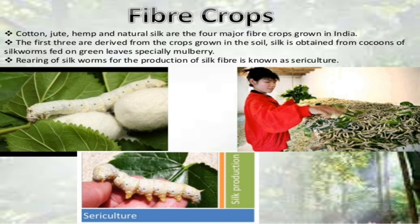Fiber crops: Cotton, jute, hemp and natural silk are the four major fiber crops grown in India. The first three are derived from crops grown in the soil. Silk is obtained from the cocoons of silkworms fed on green leaves, especially mulberry. Rearing of silkworms for the production of silk fiber is known as sericulture.